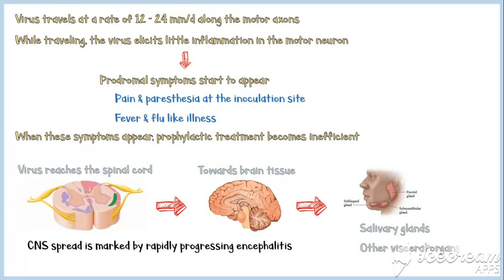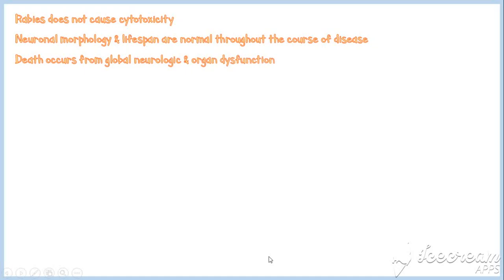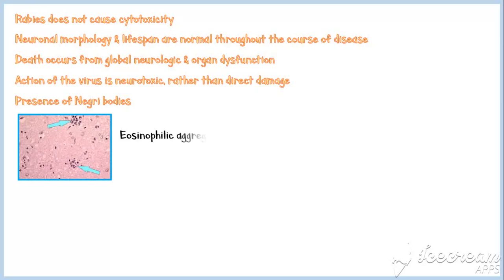This is known as the anterograde transport of the virus. It is important to note that rabies does not cause cytotoxicity. Neuronal morphology and lifespan are normal throughout the course of the disease, and death occurs from global neurologic and organ dysfunction. The action of the virus is neurotoxic rather than direct damage. In addition, rabies is characterized by the presence of Negri bodies, which are eosinophilic aggregates of viral proteins found in the cytoplasm of neurons.